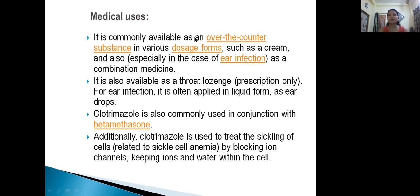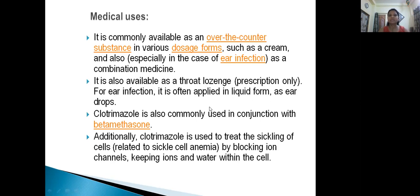Regarding medicinal uses, Clotrimazole is commonly available over-the-counter in various dosage forms such as creams for ear infections and throat lozenges. For ear infections it is applied in liquid form as ear drops. It is also used in conjunction with betamethasone. Additionally, Clotrimazole is used to treat sickling of cells in sickle cell anemia, where the RBC shape changes, by blocking ion channels and keeping ions and water within the cell.